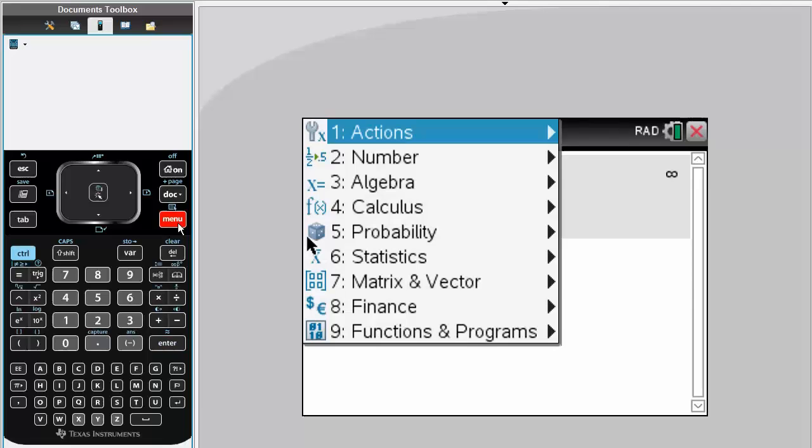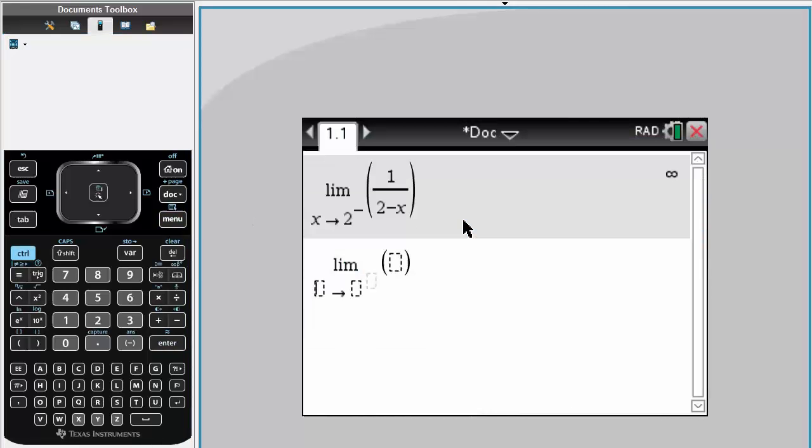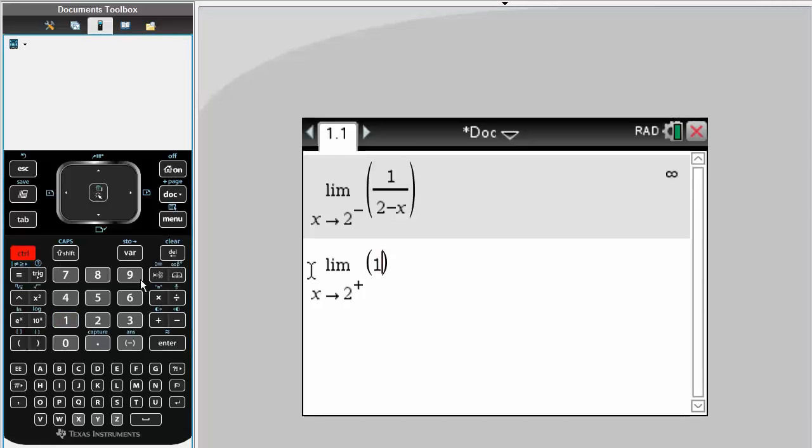Now we will do the same thing, but we will do the limit as x approaches 2 on the positive end. That means like 2.001. So we do 1 divided by 2 minus x.